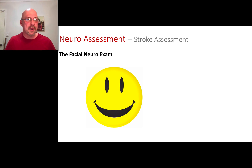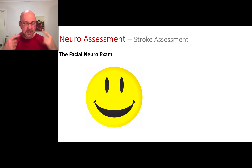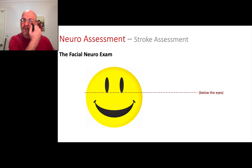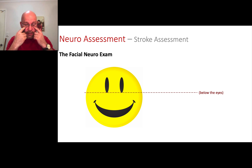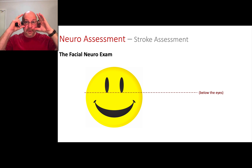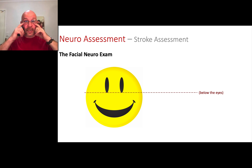I want to go into a bit more detail about the facial neural exam. That's the W we were looking at with our cranial nerves. Imagine a line drawn from the bottom of the eyes across the face. That line separates the top of our head from the bottom, and we're going to do three specific assessments above the eyes and three specific assessments below the eyes.